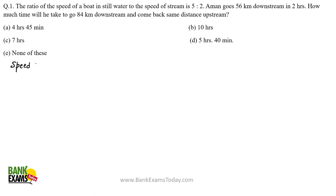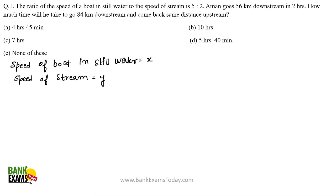Let's use a standard format. Let the speed of the boat in still water be x km/h and speed of stream be y km/h. According to the question, x:y = 5:2, so we can assume x = 5k and y = 2k, where k is a constant.